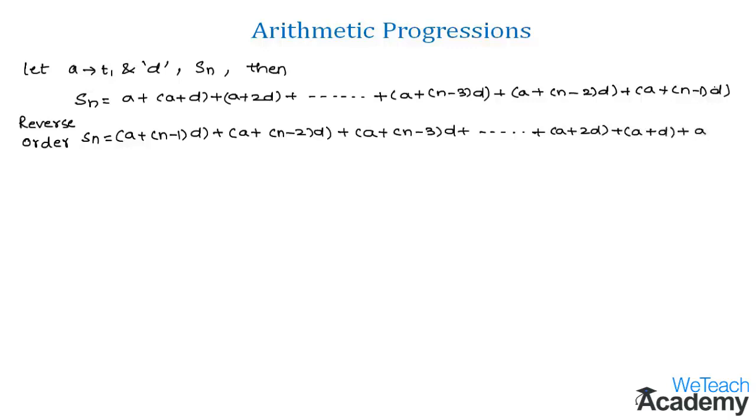Now let us consider the previous one as equation 1 and this as equation 2. And now by adding equation 1 and equation 2 term by term, what would we get? Here if we add the first term a and in the second term the first term is a plus n minus 1 into d.